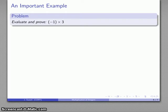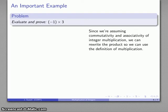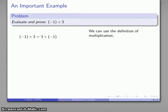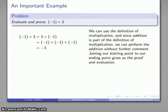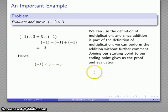Here's an important example: what if I take negative 1 times 3? Since we're assuming commutativity and associativity of integer multiplication, I can rewrite the product so I can use the definition of multiplication. Negative 1 times 3 is the same as 3 times negative 1, and by my definition of multiplication this is 3 negative 1's added together. My definition of multiplication says I can just do that addition without further comment, giving negative 1 times 3 equals negative 3.